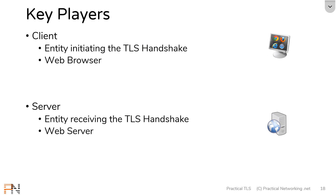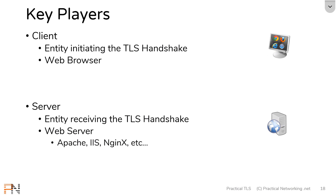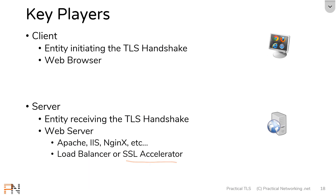From the client's perspective, this is typically web browsers — things like Chrome, Safari, Internet Explorer, or Firefox. On the server side, the web server will be the actual web server software, things like Apache, IIS, or Nginx. It could also be a load balancer or an SSL accelerator — both of these are devices which can terminate an SSL handshake.